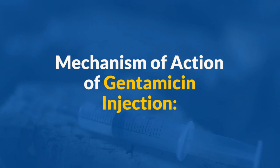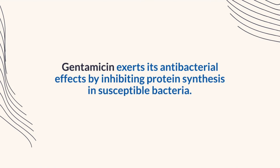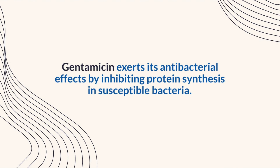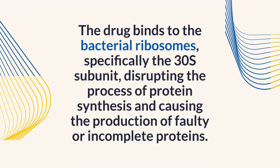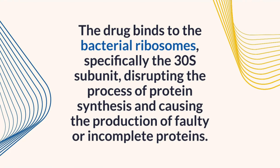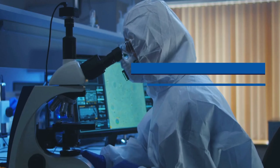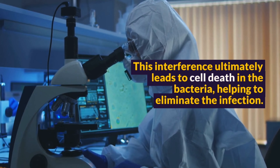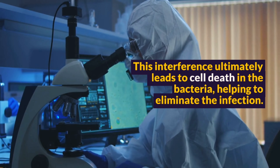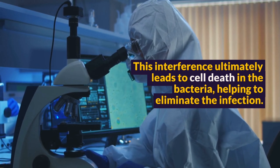Mechanism of action of gentamicin injection: gentamicin exerts its antibacterial effects by inhibiting protein synthesis in susceptible bacteria. The drug binds to the bacterial ribosomes, specifically the 30S subunit, disrupting the process of protein synthesis and causing the production of faulty or incomplete proteins. This interference ultimately leads to cell death in the bacteria, helping to eliminate the infection.